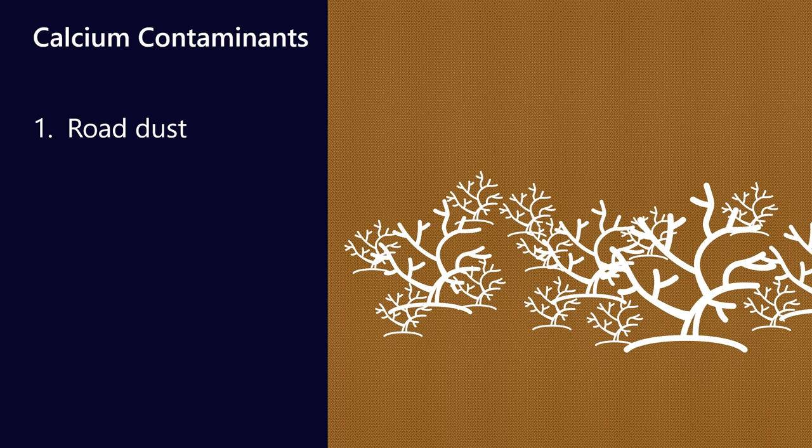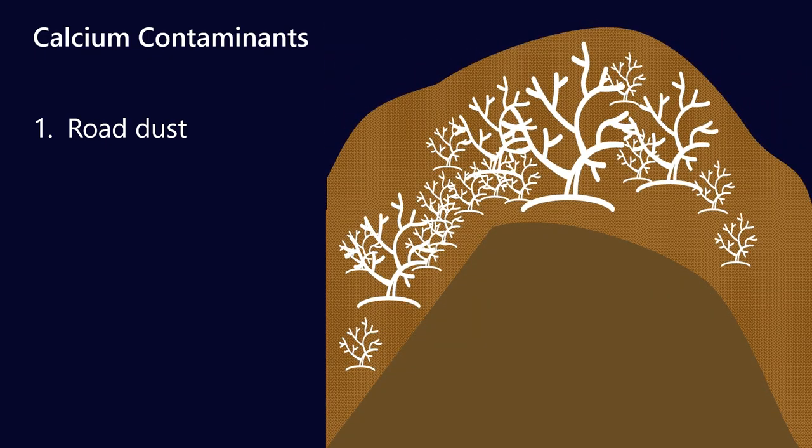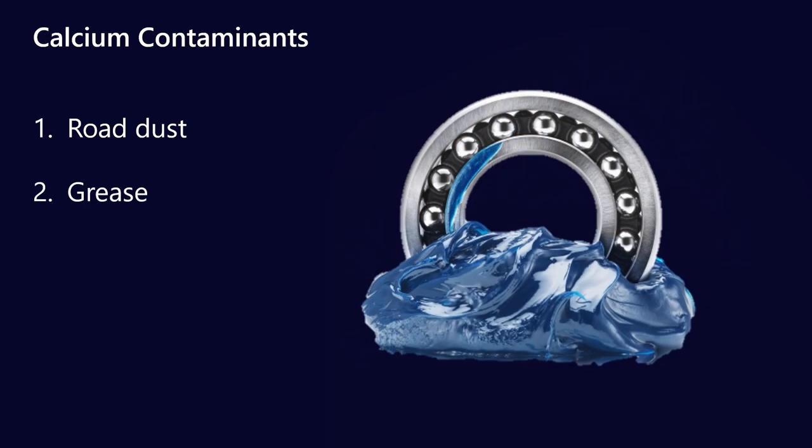Well, over time, as the tectonic plates move, these can get shifted out of place. So rather than being deep underground, it might be that the tectonic plates move such that that old coral reef now becomes a mountain. And now if you cut away at the mountain, you're cutting into the coral reef bed and it exposes the calcium carbonate to the air. And that's why calcium can often be part of road dust.